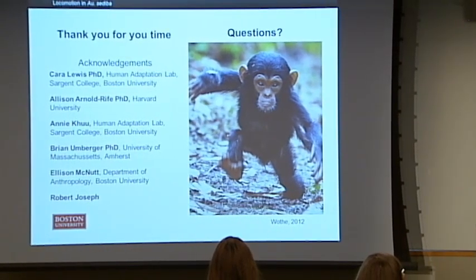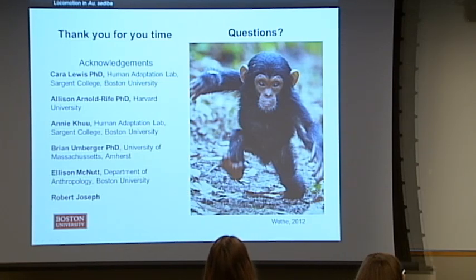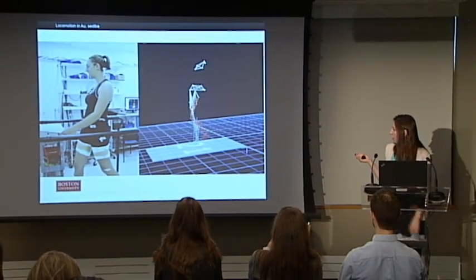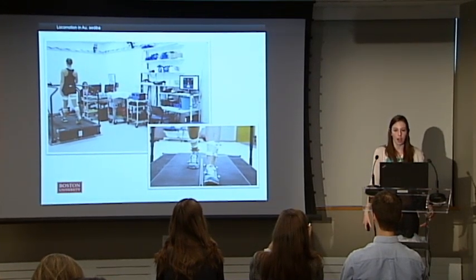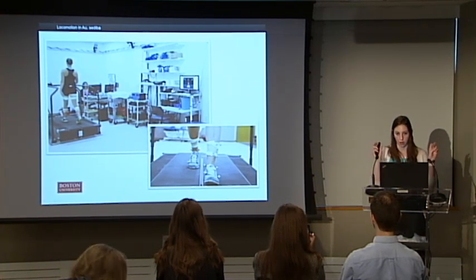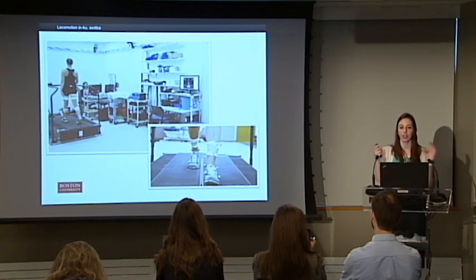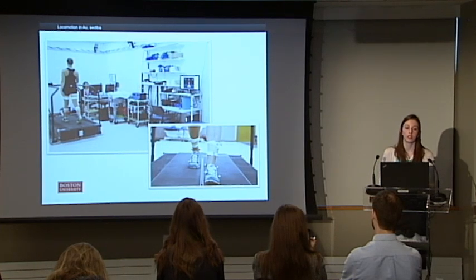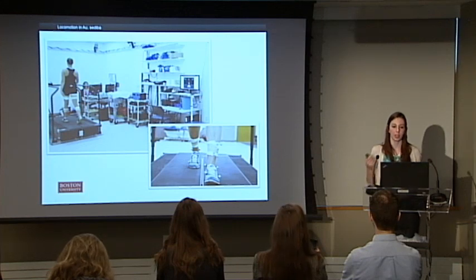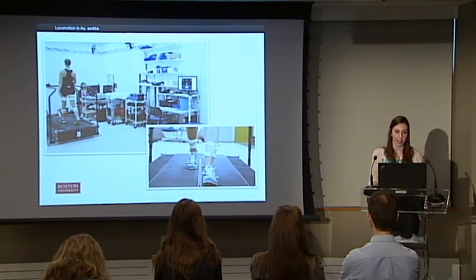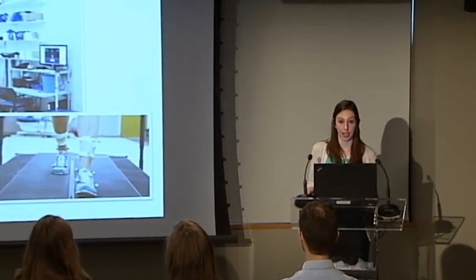Question: When determining your human model, how did you characterize it? What characteristics were you looking at to find a base model? Answer: I used a specific human subject. When we put all the markers on her in the Human Adaptation Lab, it measures her limb proportions and then scales the generic model to approximate her exact size. We wanted someone who was a baseline, average human and who could walk in both normal gait and hyperpronating gait to serve as a valid comparison.